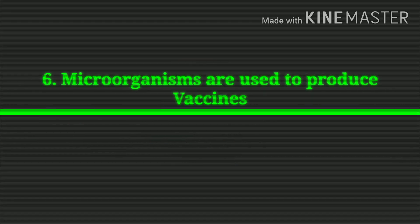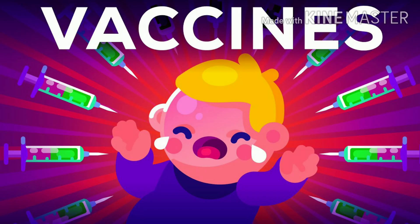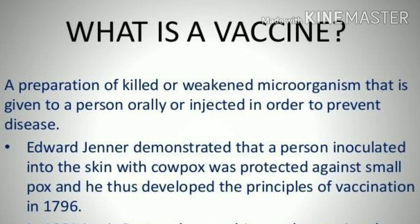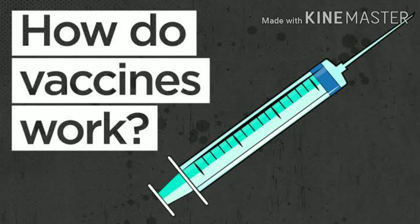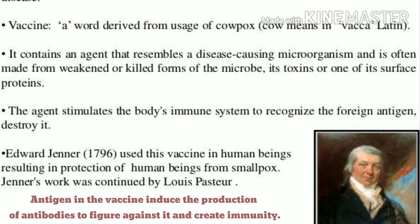Microorganisms are used in the production of vaccines. Vaccines are weakened forms of microorganisms which are injected into a person's body to create immunity. The vaccine, acting as an antigen, when injected, causes the body to develop proteins called antibodies that resist the disease. The first vaccine was developed by Edward Jenner for smallpox.